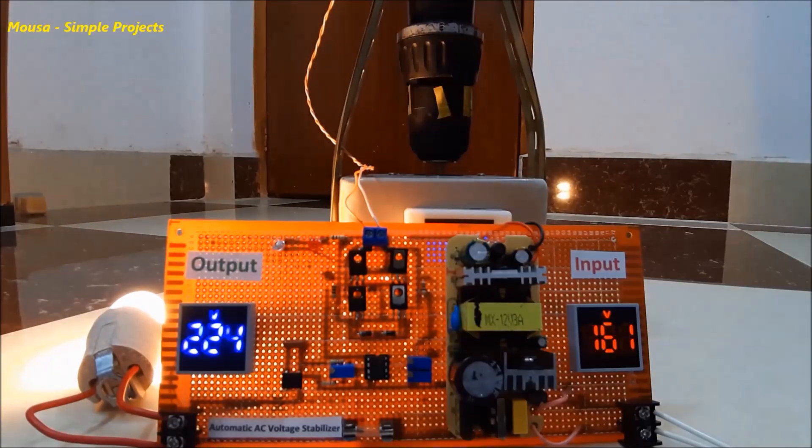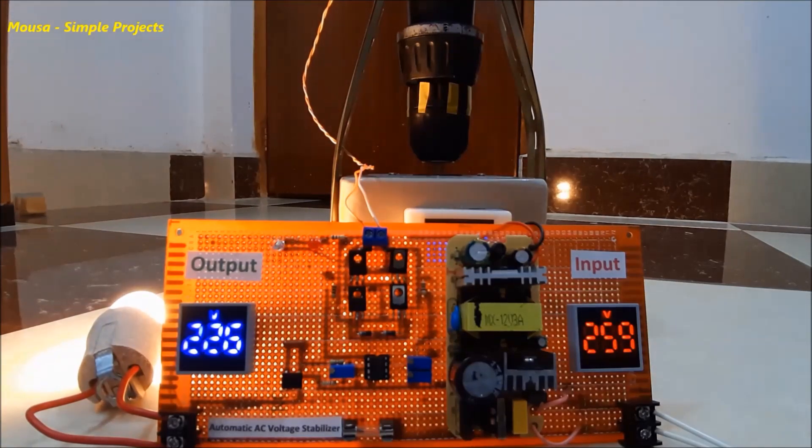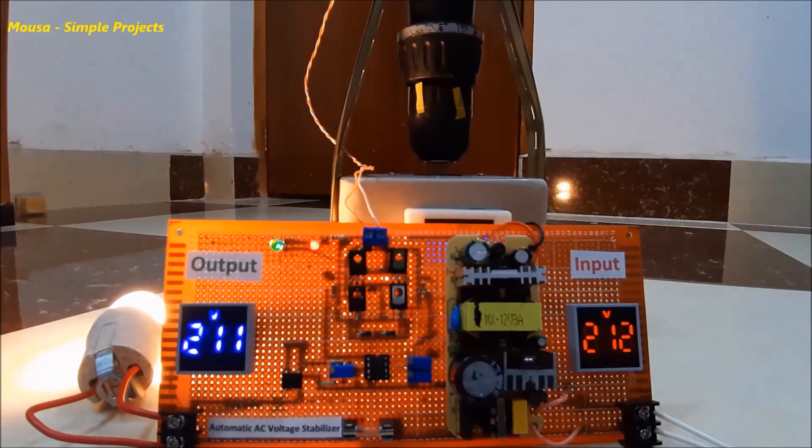The polarity of the motor is very important. You have to make sure that the motor is spinning clockwise when the output voltage is high, and anti-clockwise when the output voltage is low.